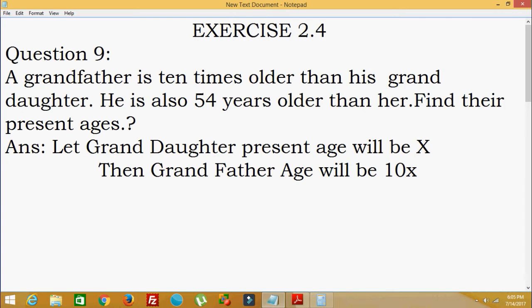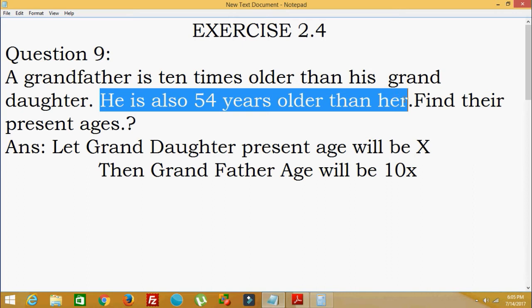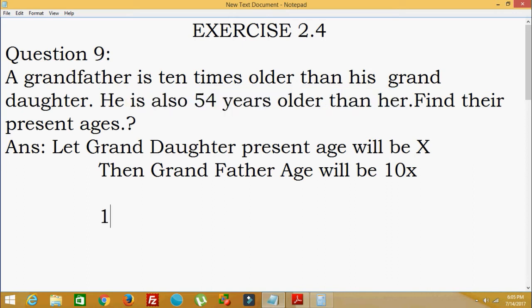This is the first statement. And in the second statement, grandfather, you see here, he is also 54 years older than her. That is grandfather age, that is 10X. Grandfather age, he is equal to 54 years more than the granddaughter age. This is what he has given.